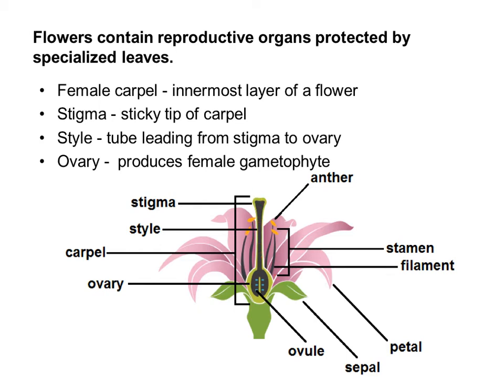The carpel has three parts. It has a stigma at the top — I like to call it the sticky stigma because it's the sticky tip of the carpel that captures pollen spread by pollinators or wind. The next part is the style, which is the tube leading from the stigma to the ovary. The ovary produces the female gametophyte, and inside the ovary you also have ovules, which will develop into eggs.